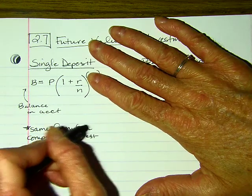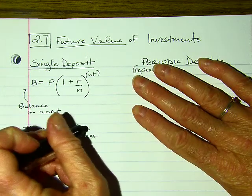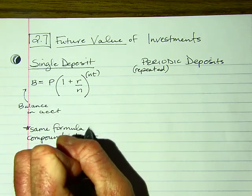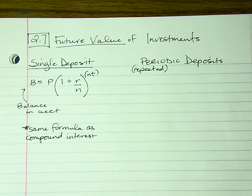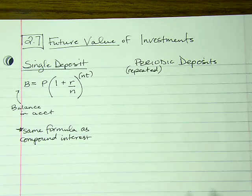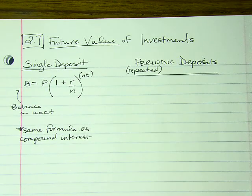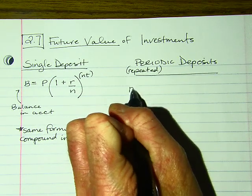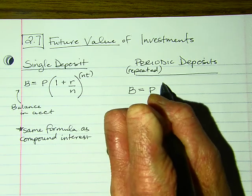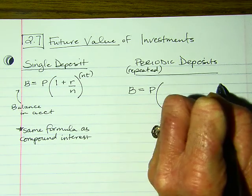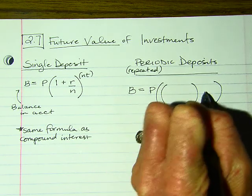This is the same formula we used in the prior section for compound interest — the only difference is they've used a B instead of an A. For periodic deposits, the formula is a bit more complicated. The balance equals what you deposit times a big parenthesis containing a smaller set on the inside.